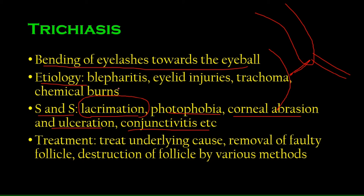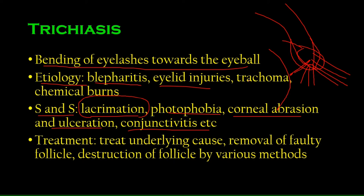Etiology — how or why can trichiasis occur? Blepharitis can cause it: when the eyelid gets inflamed and there is edema, the shape changes, causing eyelashes that were once straight to eventually turn rogue and grow in undesirable directions. Eyelid injuries can also cause the eyelid to bend inward, making all the eyelashes rub across the eyeball — which is again trichiasis.